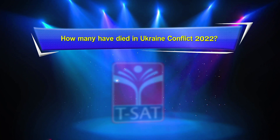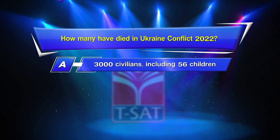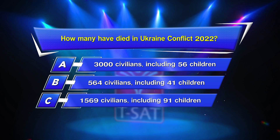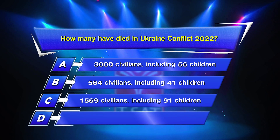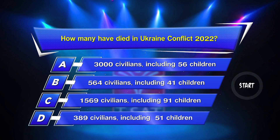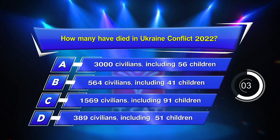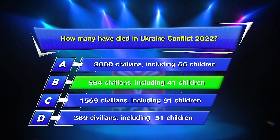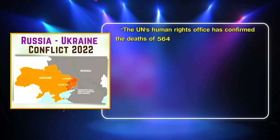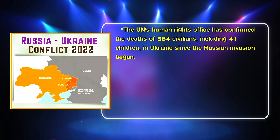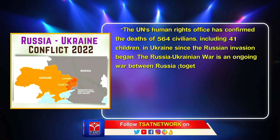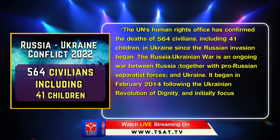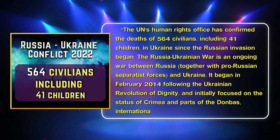The next question is about the Russia-Ukraine war. Fifth question on your screen: how many have died in the Ukraine conflict 2022? Option A: 3000 civilians including 56 children. Option B: 564 civilians including 41 children. Option C: 1569 civilians including 91 children. Option D: 318 to 389 civilians including 51 children. Your time starts now. The correct answer is Option B, 564 civilians including 41 children. The UN's Human Rights Office confirmed the deaths of 564 civilians including 41 children in Ukraine since the Russian invasion began. The Russia-Ukraine war is an ongoing war between Russia together with pro-Russian separatist forces and Ukraine, beginning in February 2014 following the Ukrainian Revolution of Dignity, initially focused on the status of Crimea and parts of the Donbas.